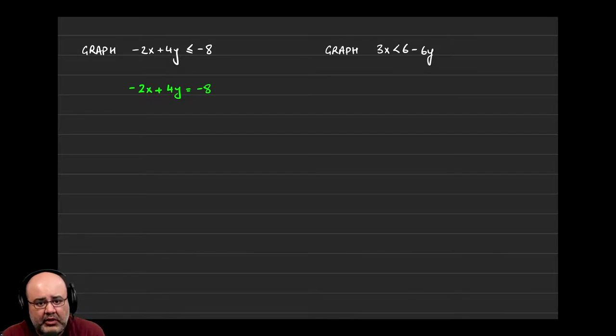We temporarily drop the inequality and just have things equal to each other. Similar options as previous examples come up. You can either pick points, plug some values of x and solve for y...